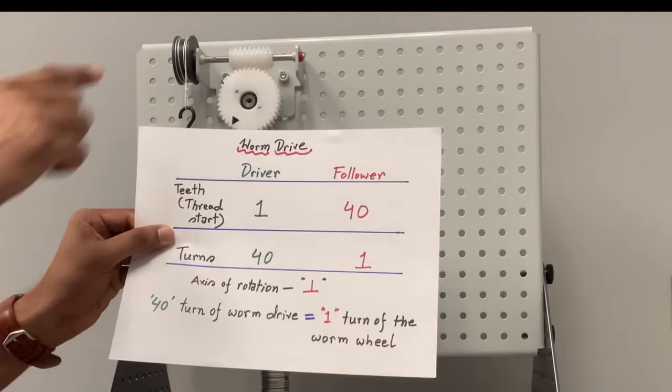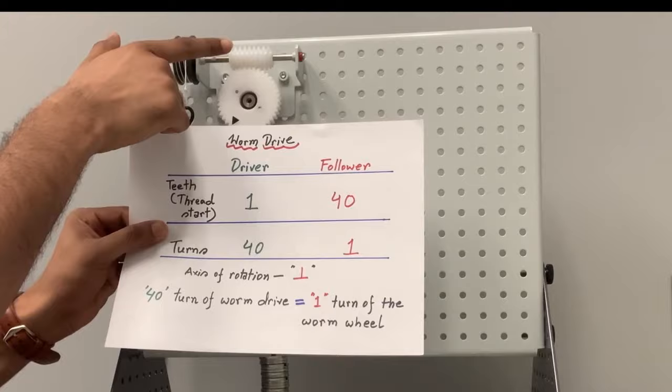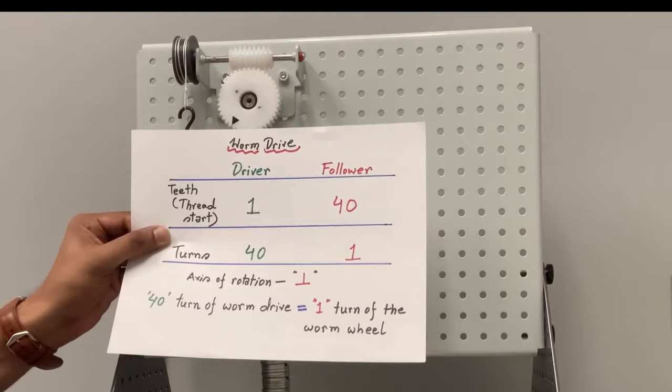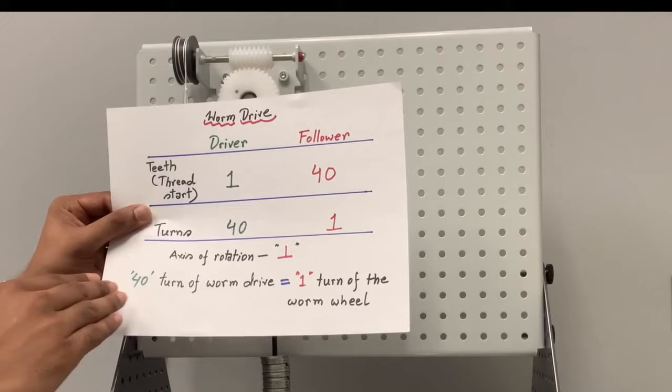So this is our summary. We have the worm drive which has one thread start. The follower has 40 teeth. If the worm drive turns 40 turns, the wheel will turn one turn or one revolution. The axis of rotation is perpendicular, 90 degrees, because it is rotating this way and the wheel is rotating perpendicular direction.